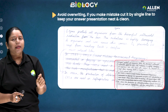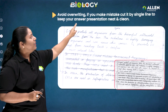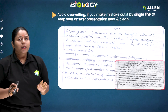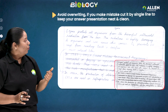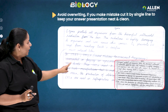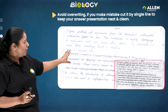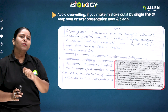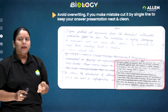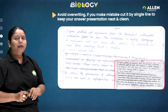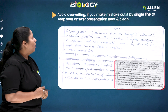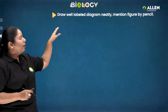Avoid overwriting. If you make a mistake, cut it with a single line to keep your answer presentation neat and clean, as presentation is very important for making an impression on the examiner. For example, if a student wrote four incorrect lines, a single strikethrough marks them and the student starts writing again — in this way the presentation remains neat and the examiner understands which part is incorrect.